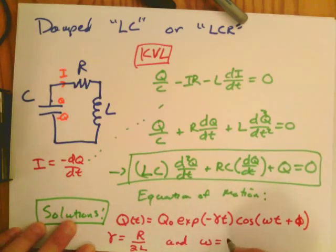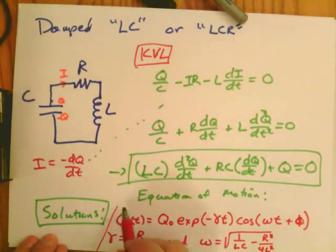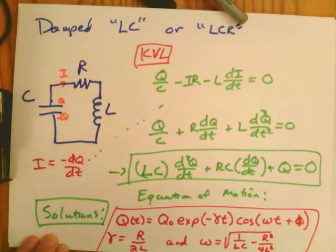So gamma is R over 2L, which corresponds to decay time, decay rate. And omega is 1 over LC minus R² over 4L², which is a slightly different frequency than we had before.